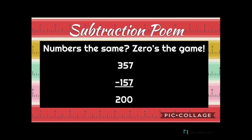Last but not least, we have "numbers the same, zeros the game." If you see two of the same numbers in the same place value, they're going to equal zero. Here I have a seven and a seven in the ones place, and a five and a five in the tens places — so those are both going to be zero. Then in the hundreds place I have more on top, no need to stop: three minus one is two.